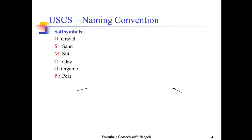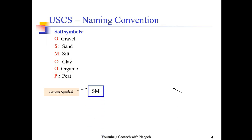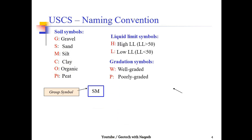In the USCS system, gravel is denoted by G, sand by S, silt by M, clay by C, organic by O, and PT stands for peat. Group symbols combine these letters — for example, SM stands for silty sand. For liquid limit symbols: H denotes high liquid limit when liquid limit is more than 50, and L denotes low liquid limit when liquid limit is less than 50.